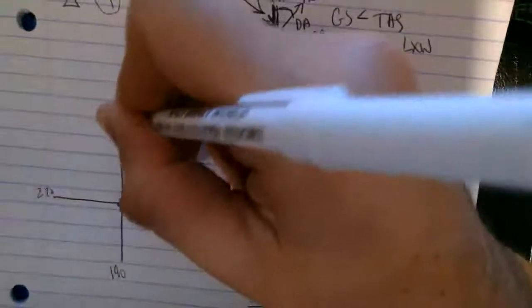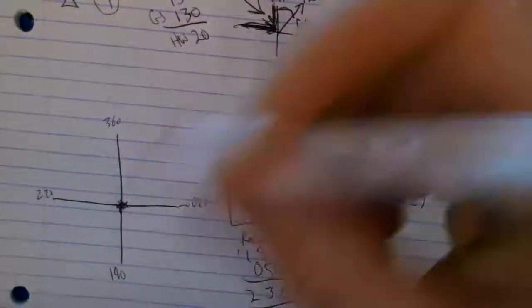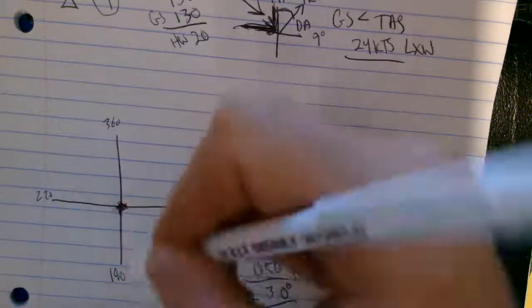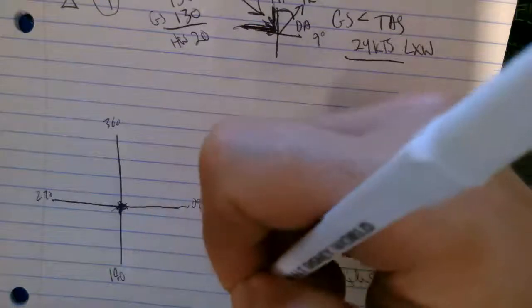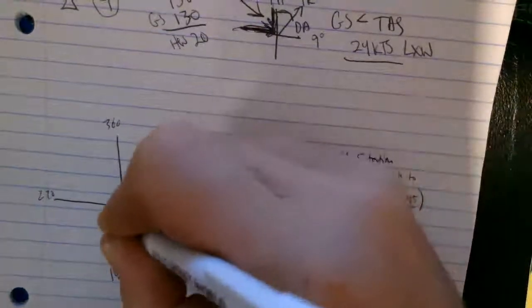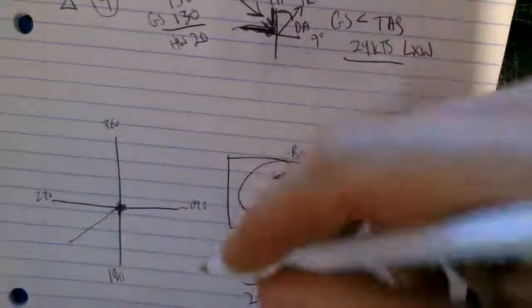So 230, this is 180. 270, 360, 090. 230 is going to be over here somewhere. So 180 plus 40 is 220. So it's almost like, it's a little over halfway. So there's 230.